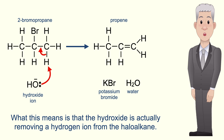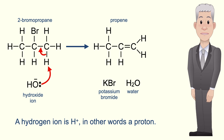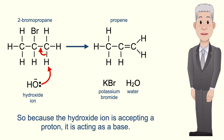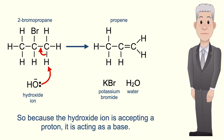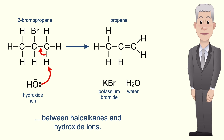What this means is that the hydroxide is actually removing a hydrogen ion from the haloalkane. A hydrogen ion is H⁺ — in other words a proton. So because the hydroxide ion is accepting a proton it's acting as a base. Hopefully now you can describe the elimination reaction between haloalkanes and hydroxide ions.